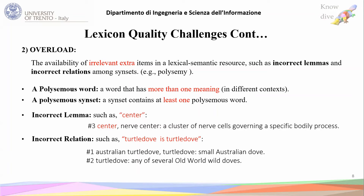For overload, which is the opposite of the first category, there is the availability of irrelevant or extra items in a lexical semantic resource, such as incorrect lemmas or incorrect relations among sense-sets. A key example in this category is polysemy. A polysemous word is a word that has more than one meaning, and a polysemous sense-set contains at least one polysemous word. For the following example, there is an incorrect lemma which is 'center.' If we look at the sense-set, it has two lemmas — 'center' and 'nerve center' — but the gloss describes 'nerve center,' so 'center' here is incorrect.